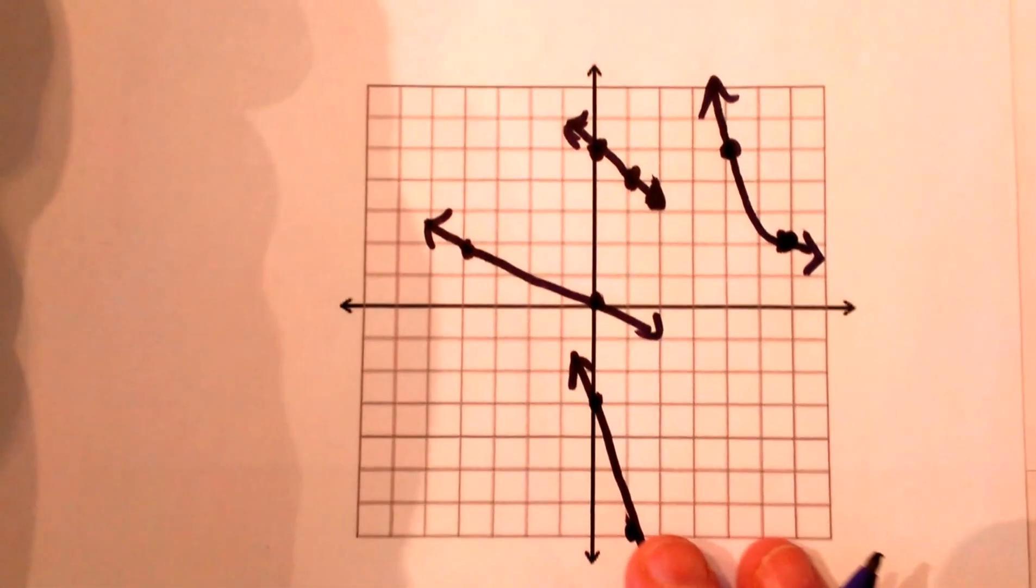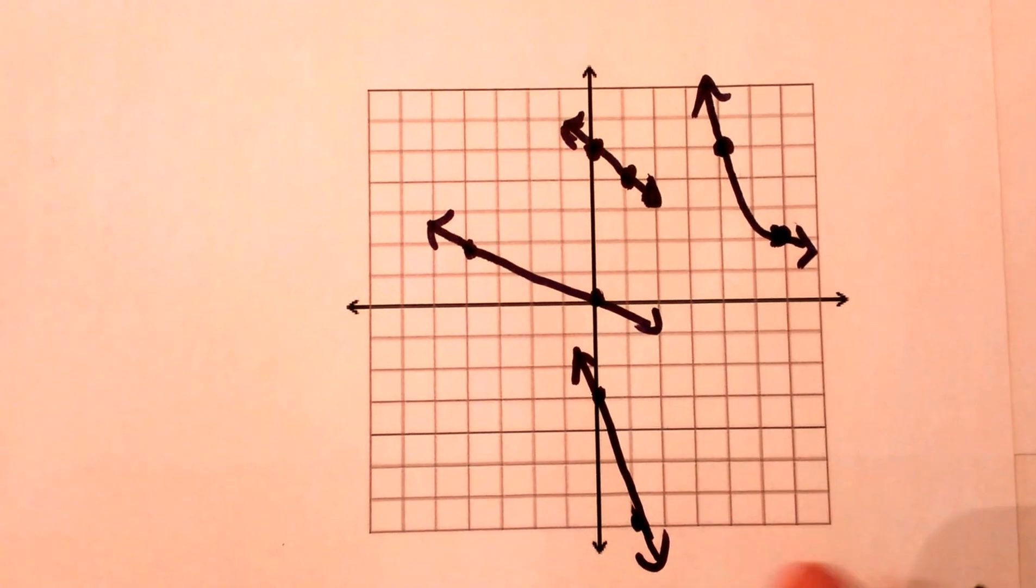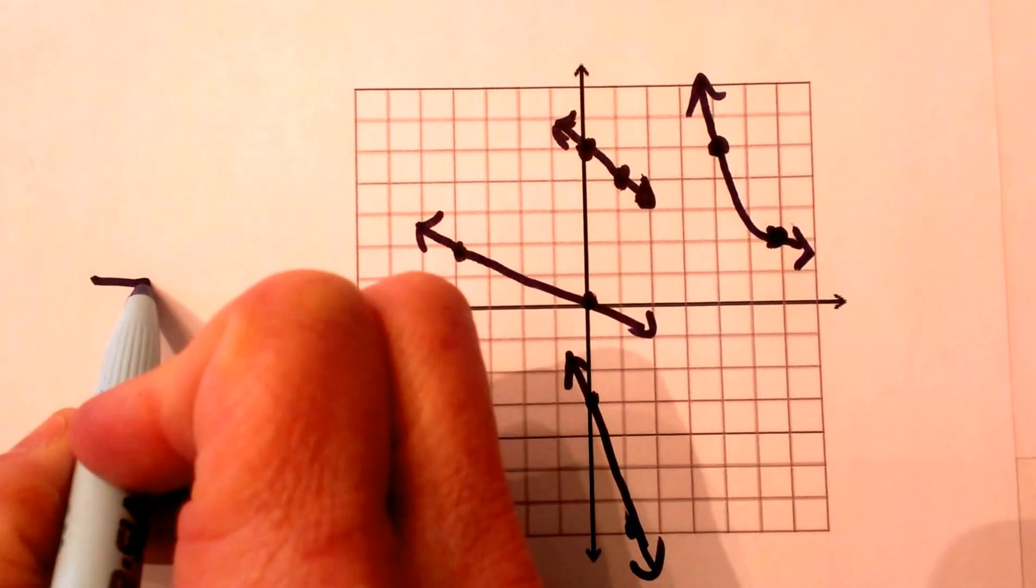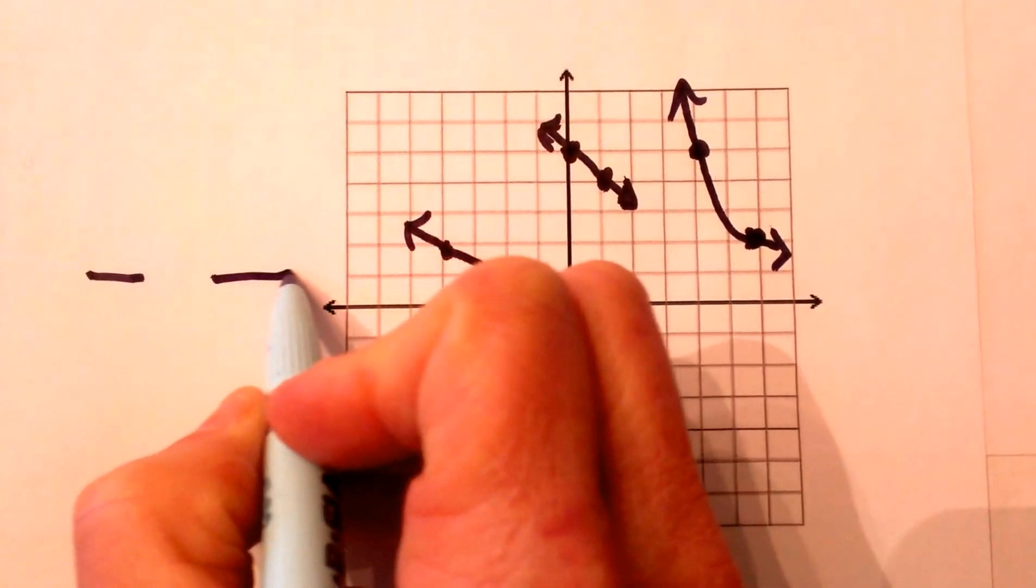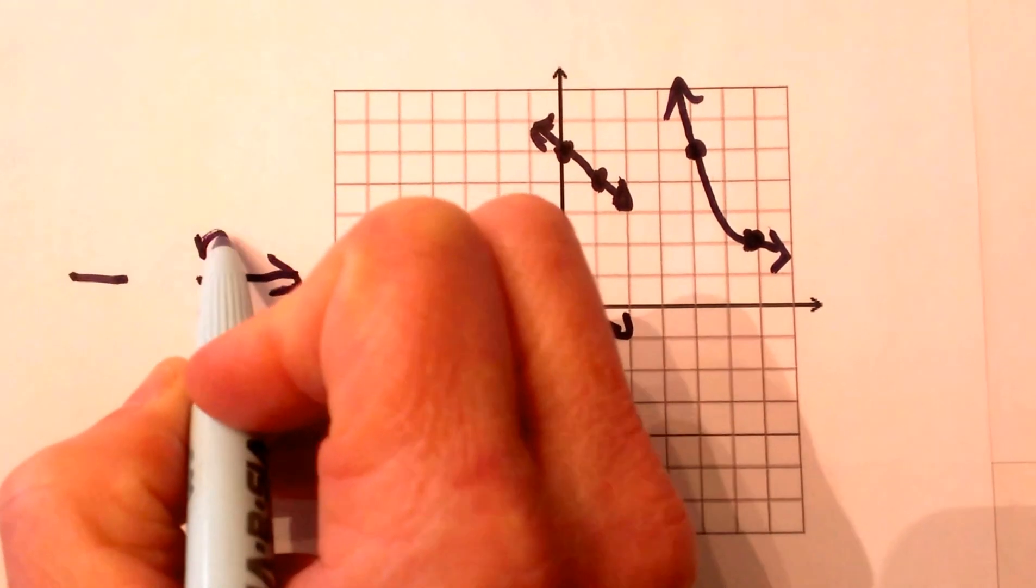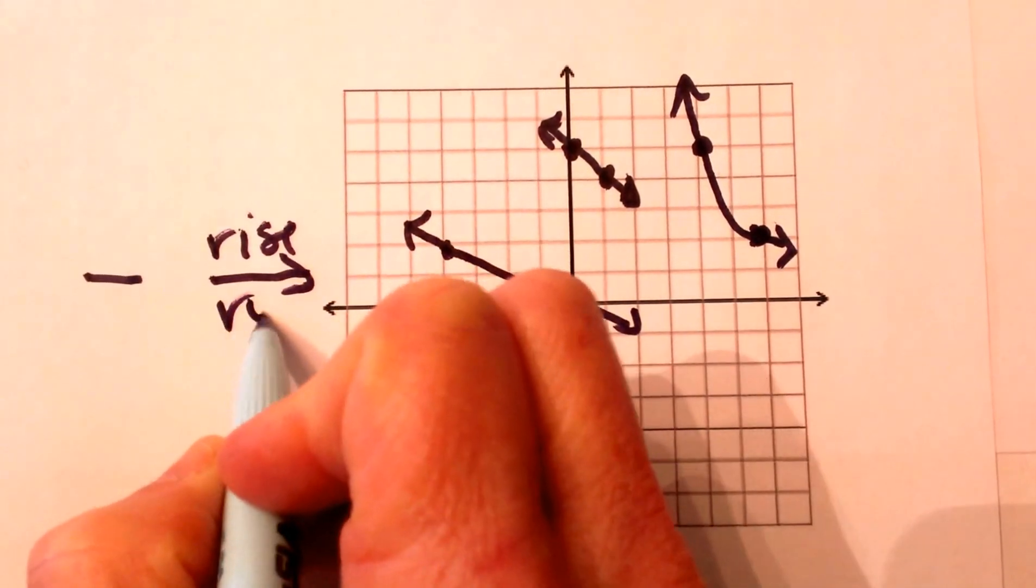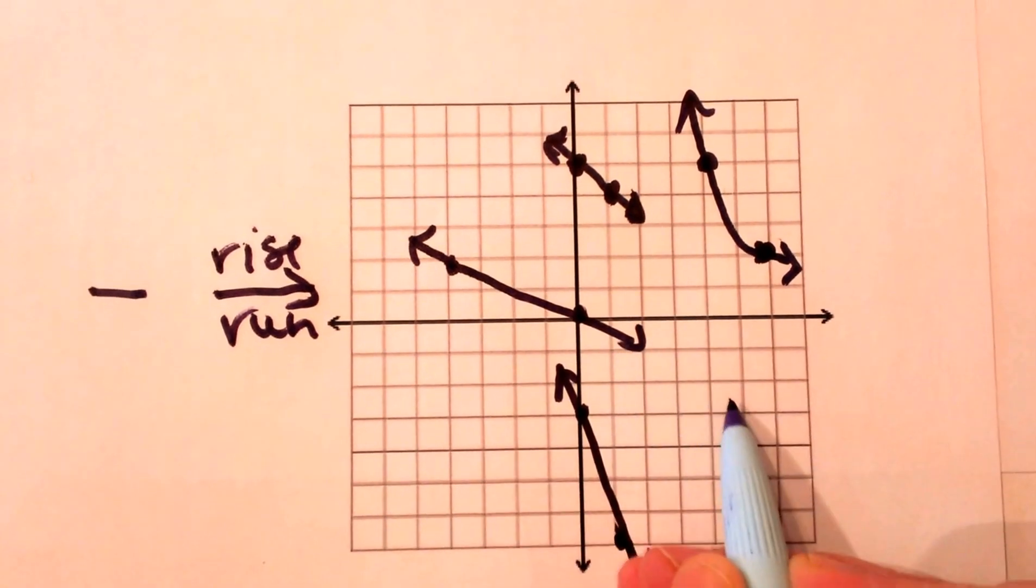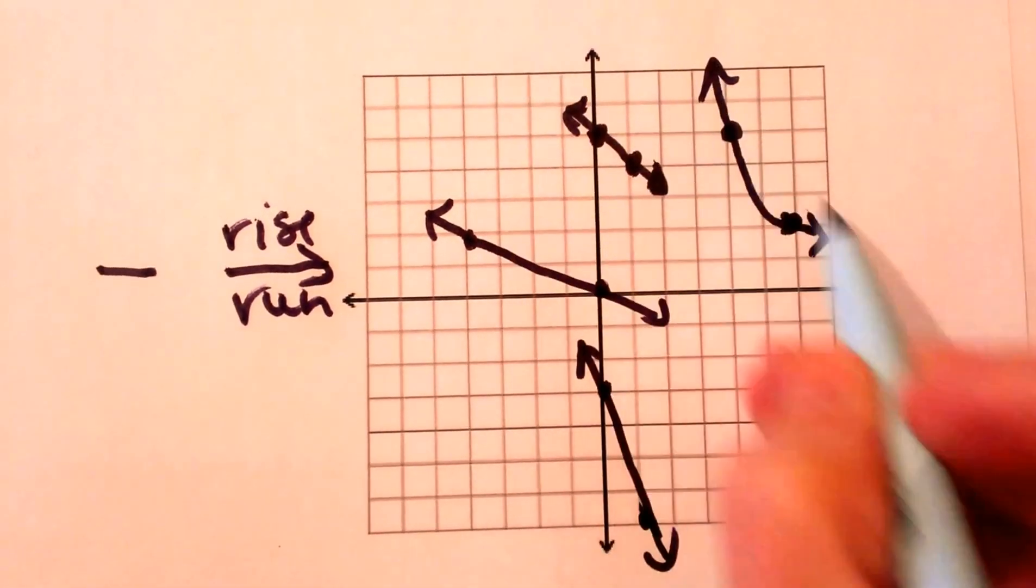Now let's look at a few examples of negative slopes. Again, we're looking at the negative slope, we're looking from left to right and we're going to count our rise over our run again. But we're going left to right and notice these are all sloping downward.